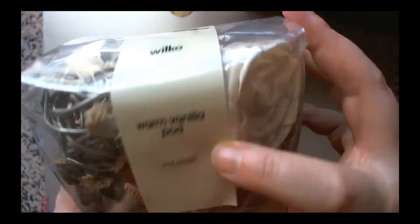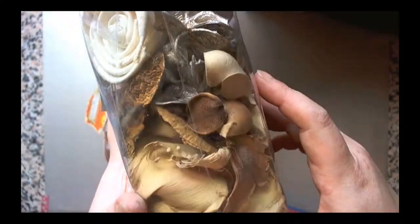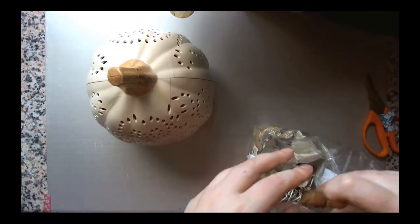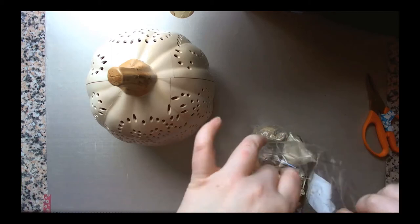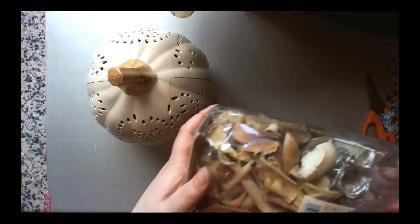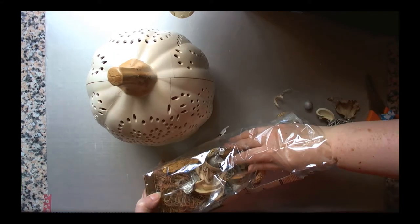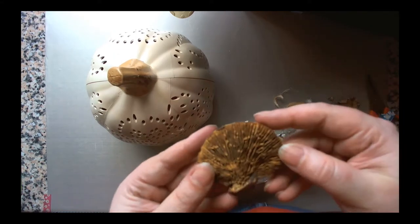When I was in Wilkinson's I also got this warm vanilla pot puree with dried mushrooms and loads of twiggy bits that would be perfect for an autumn project. When I saw the pumpkin it was pretty much a match made in heaven.